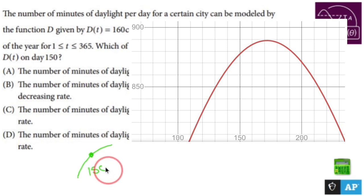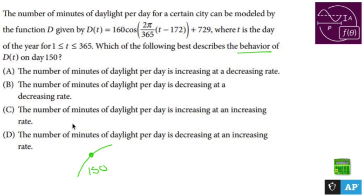So the behavior of my graph at that very moment is things are increasing. So we want increasing. Let's eliminate some answers: the number of minutes of daylight per day is decreasing - no. The number of minutes of daylight per day is decreasing - no.